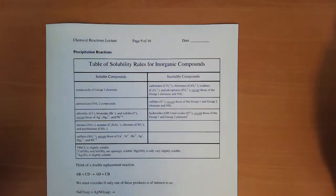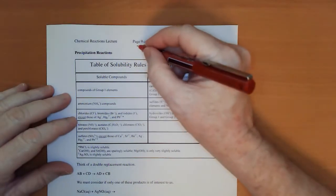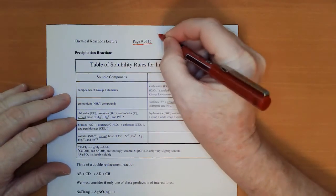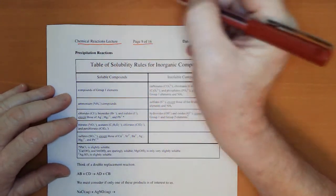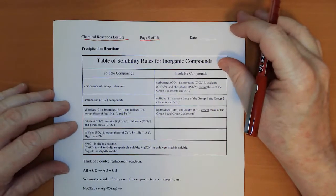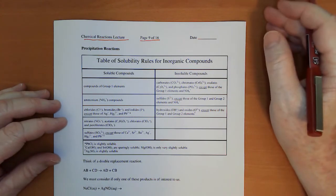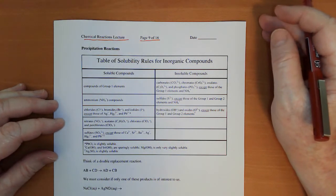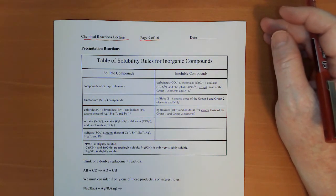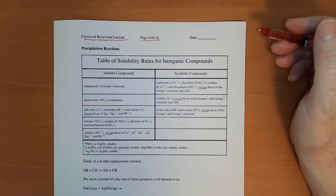Hey everyone, Morgan here. We're on page 9 and 10 of the reactions outline for AP and we're going to be reviewing net ionic equations for precipitation reactions. These were covered last year in honors.